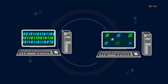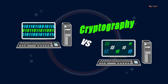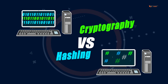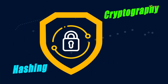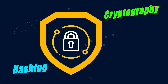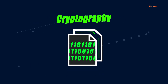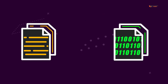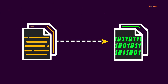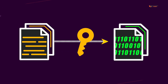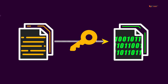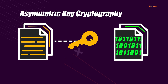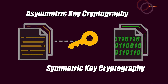In this video we are going to talk about cryptography versus hashing, as these two terms are used interchangeably whenever you deal with cyber security. Cryptography is a technique through which you hide data by running it through an algorithm and a key. Cryptography is of two types: asymmetric and symmetric.